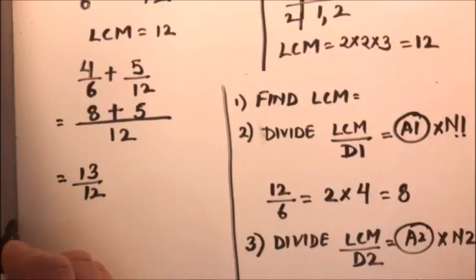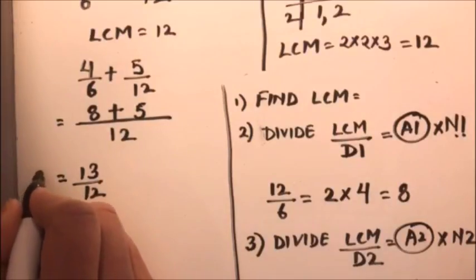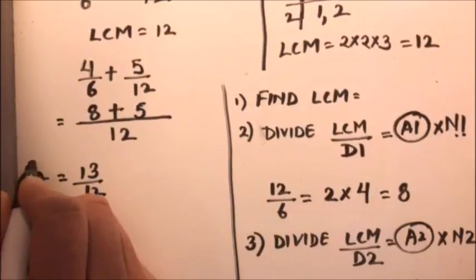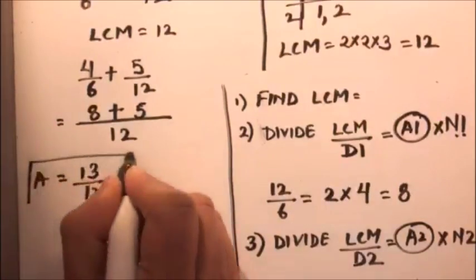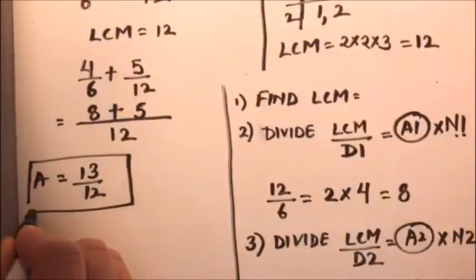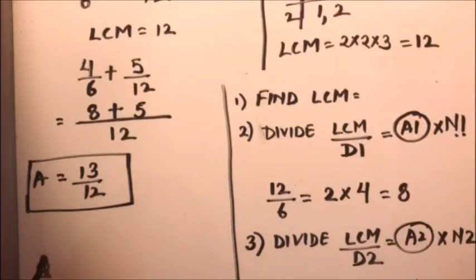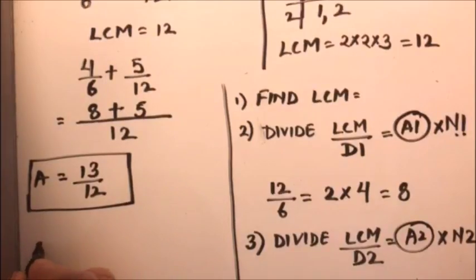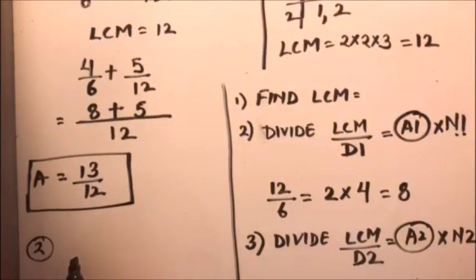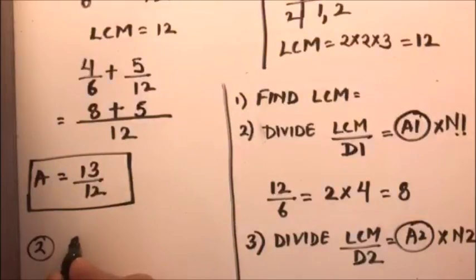So the result is eight plus five over twelve, which is thirteen over twelve. That is our answer. When we add four over six and five over twelve, we get thirteen over twelve.